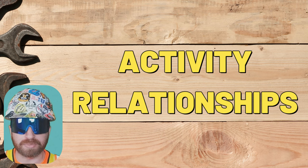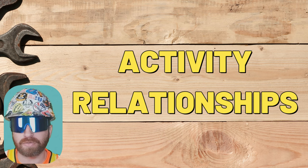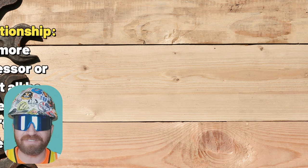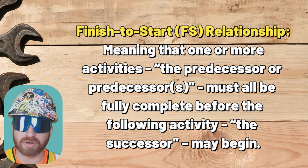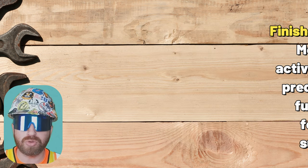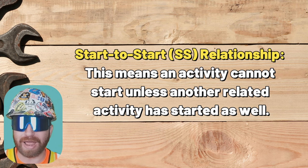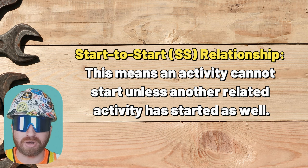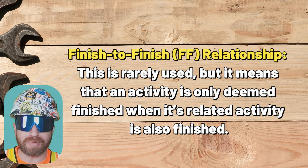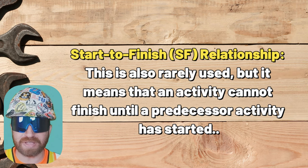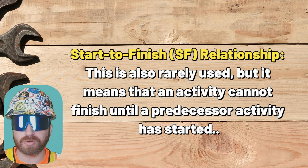There are four activity relationship types when it comes to scheduling. The first is a finish-to-start or FS relationship, meaning one or more predecessor activities must all be fully complete before the successor may begin — this is the most common type. Next is a start-to-start or SS relationship, meaning an activity cannot start unless another related activity has also started. Then there's a finish-to-finish or FF relationship, which is rarely used, meaning an activity is only deemed finished when its related activity is also finished. Finally, the fourth type is a start-to-finish or SF relationship, also rarely used, meaning an activity cannot finish until a predecessor activity has started.